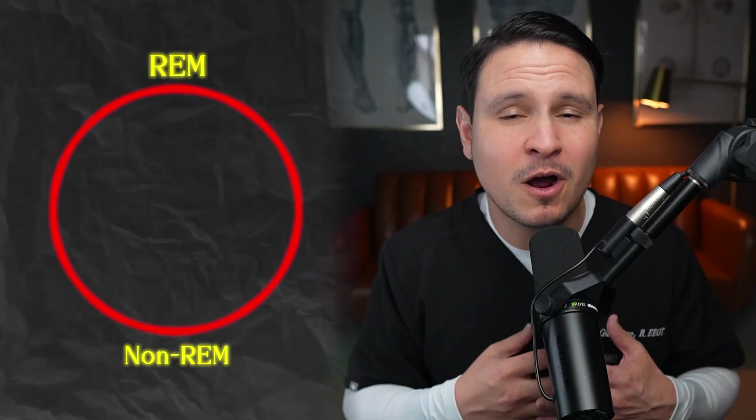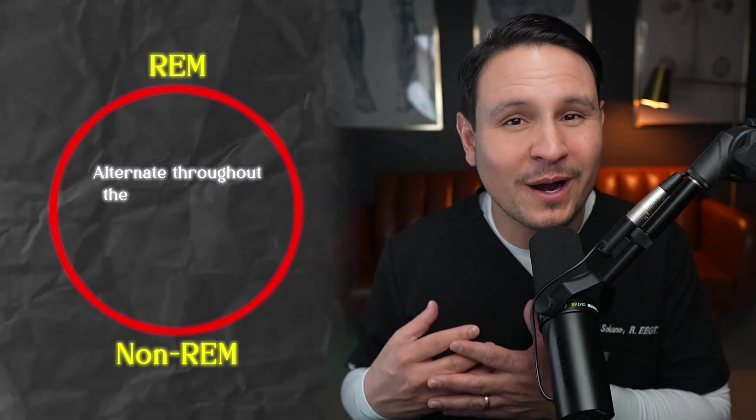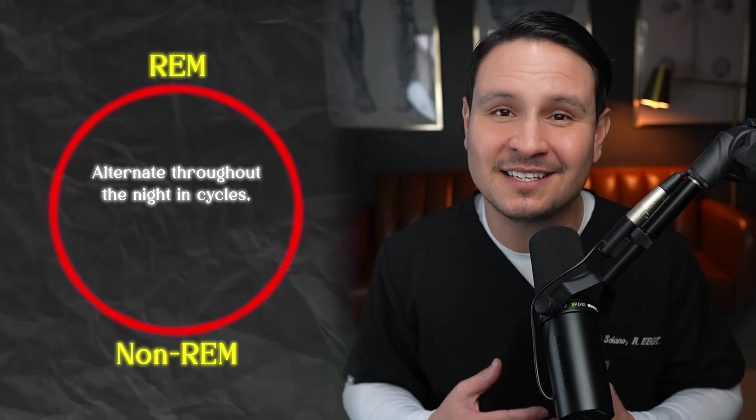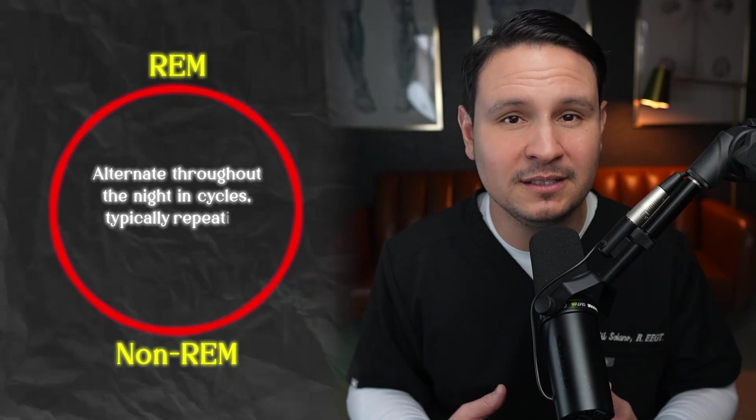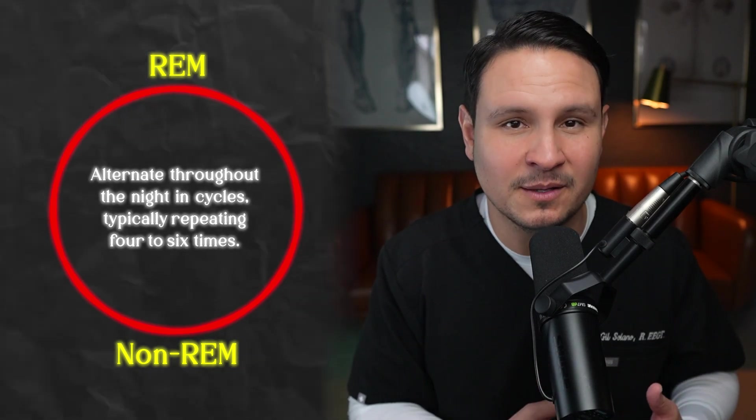REM and non-REM sleep alternate throughout the night in cycles, typically repeating four to six times. Early in the night, non-REM sleep dominates, allowing the body to recover and repair.